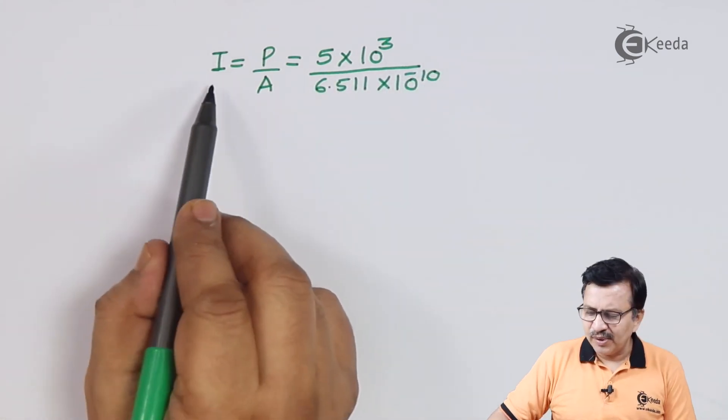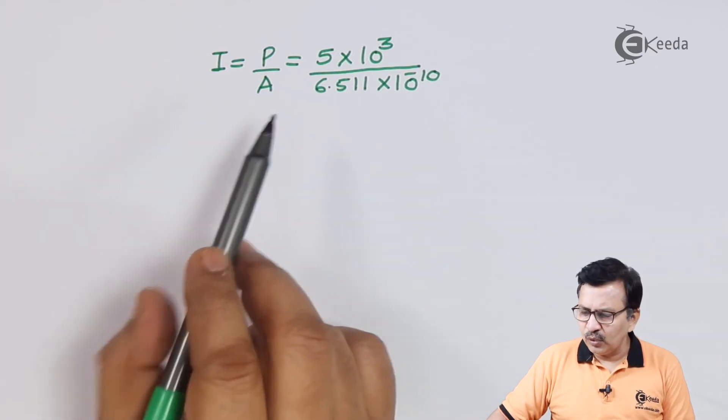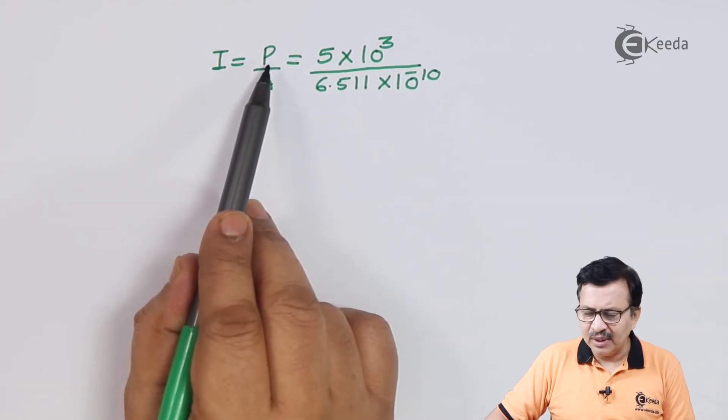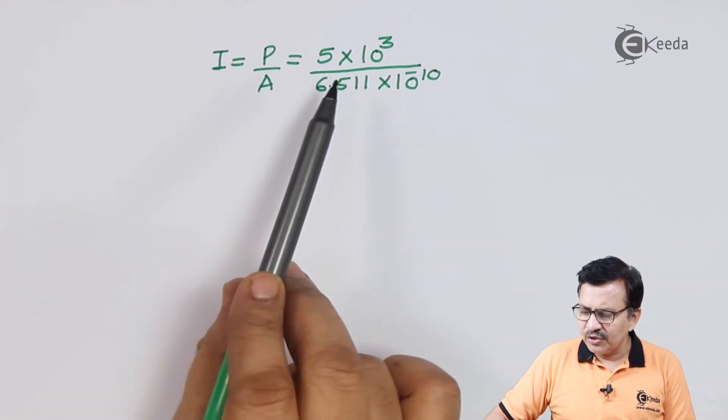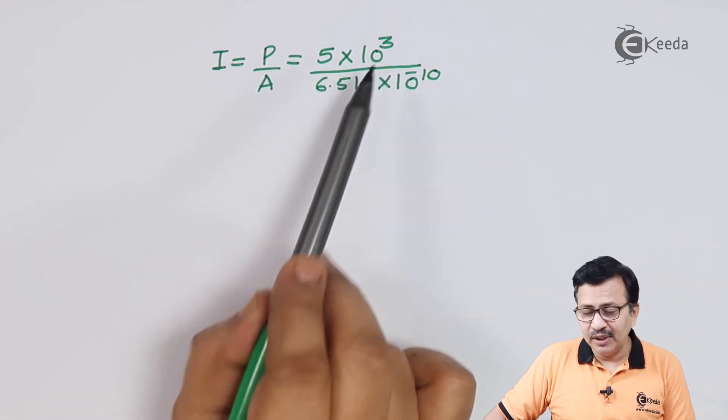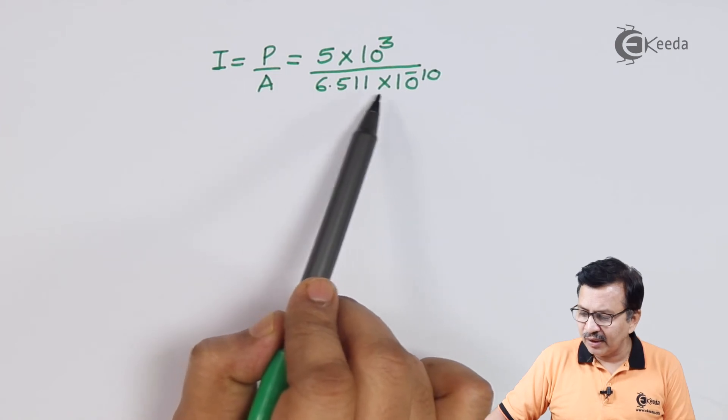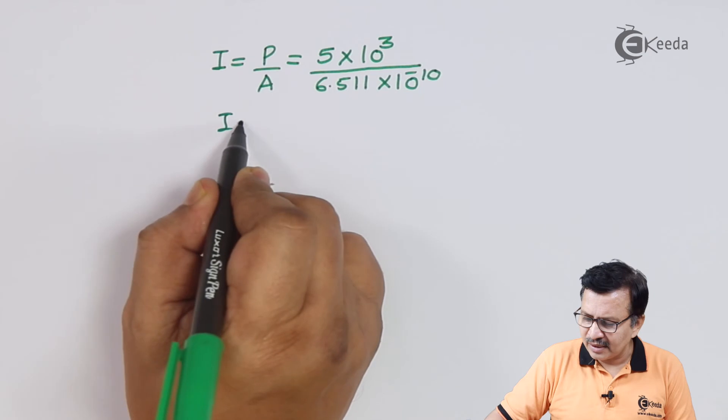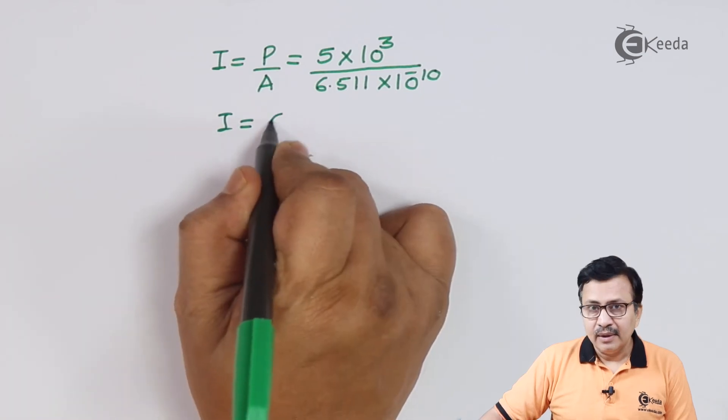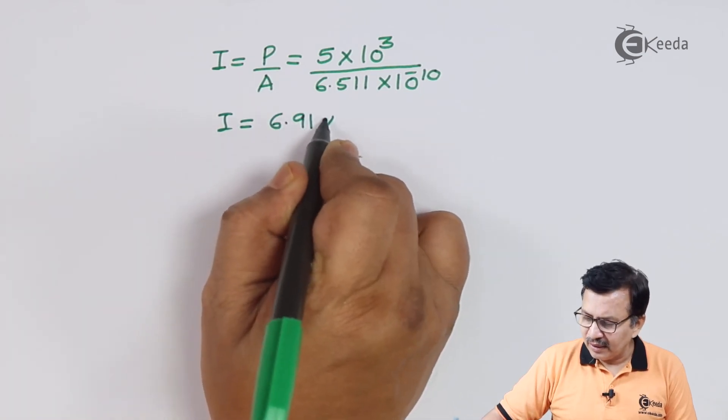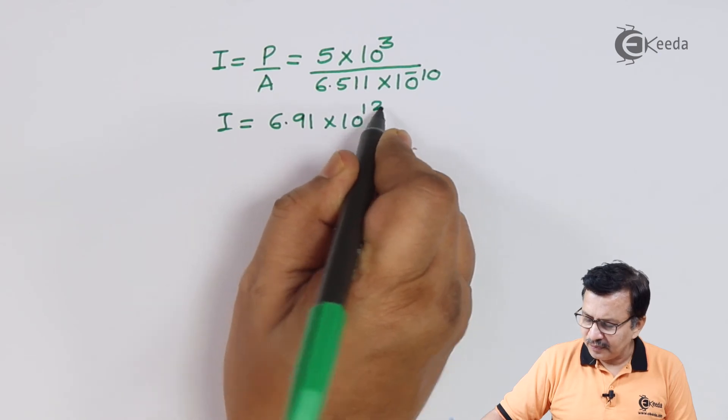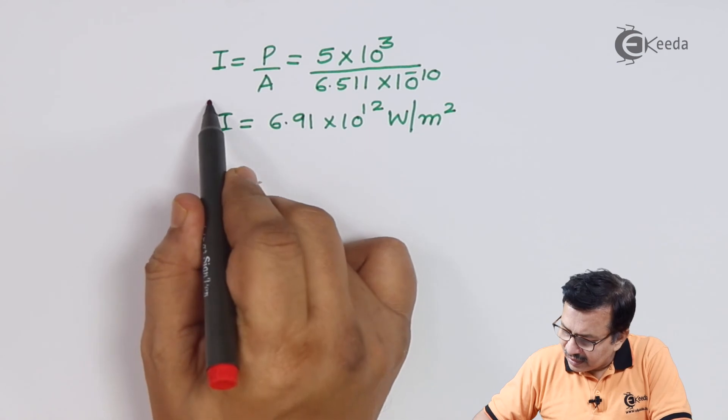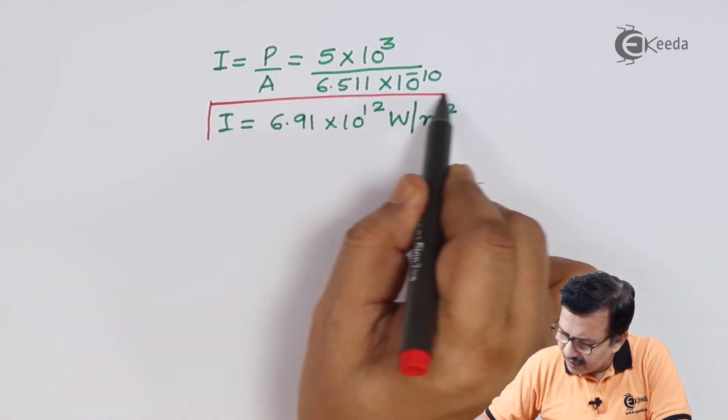So the intensity I is equal to the value of the power which we have calculated, divided by the area of the spot, which is equal to 5 × 10³ divided by 6.511 × 10⁻¹⁰. This works out to an intensity of 6.91 × 10¹² watts per meter squared.